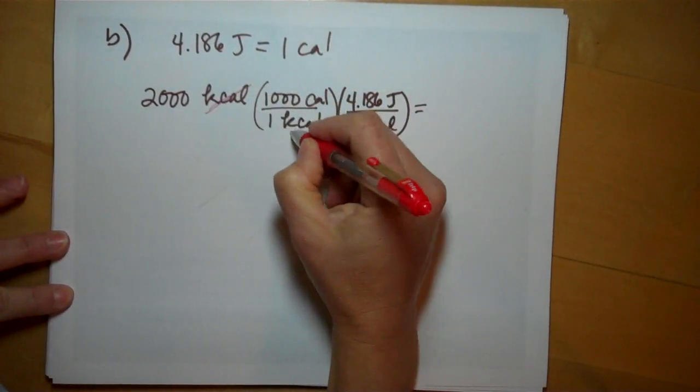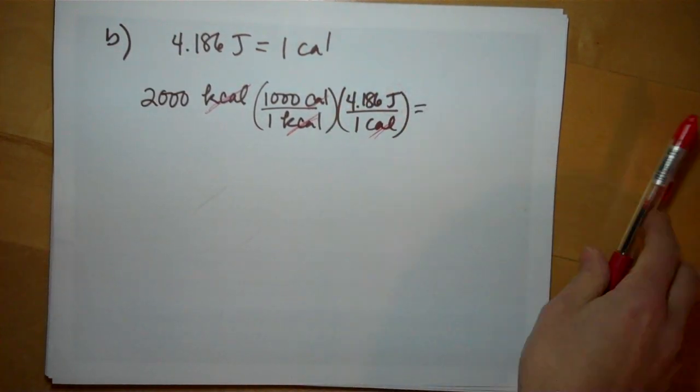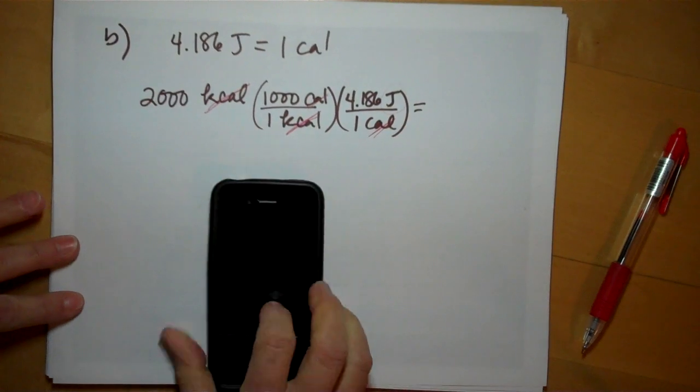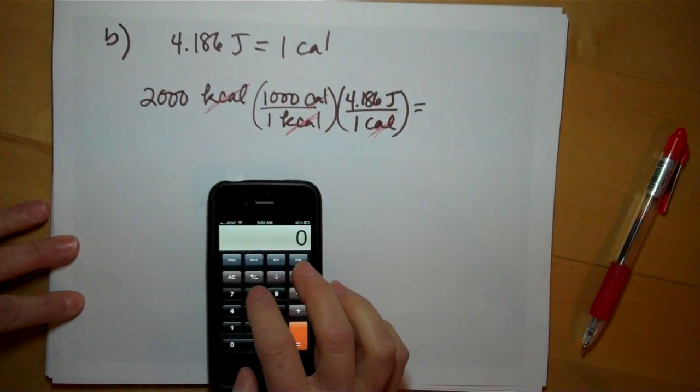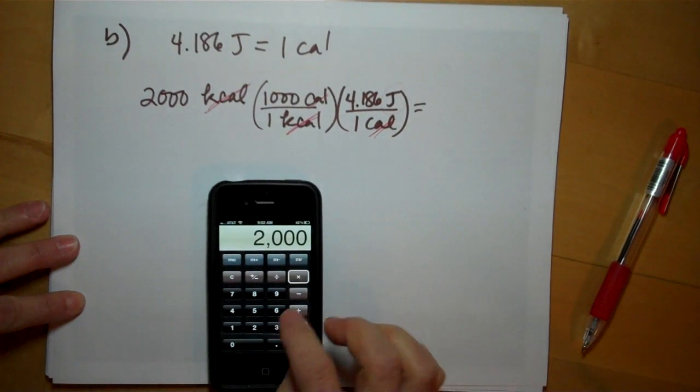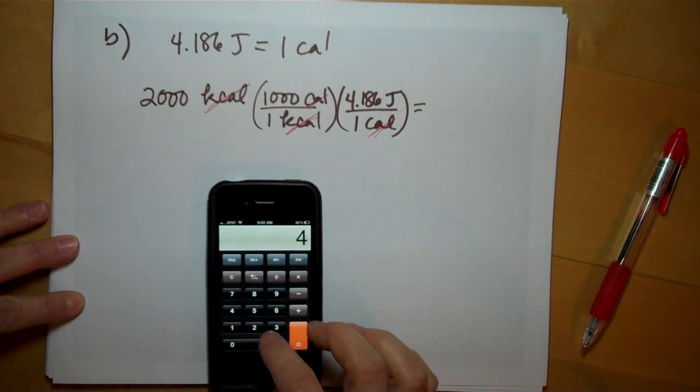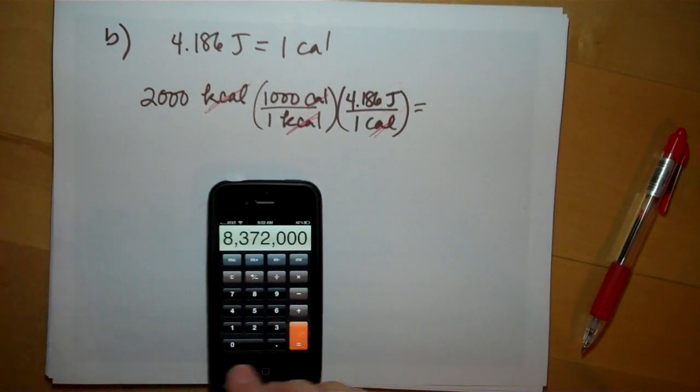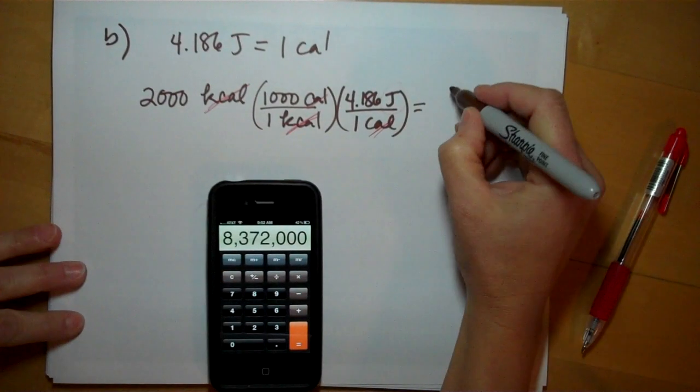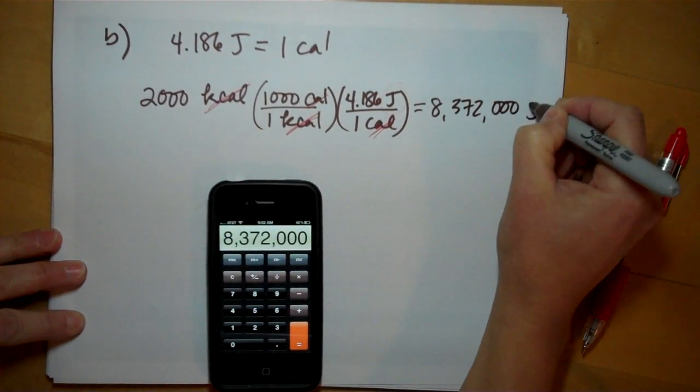Kilocalories cancel, calories cancel, and you're left with just joules. Doing this math, 2000 times 1000, just add three zeroes, times 4.186 is 8,372,000 joules.